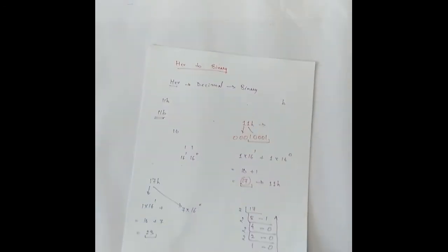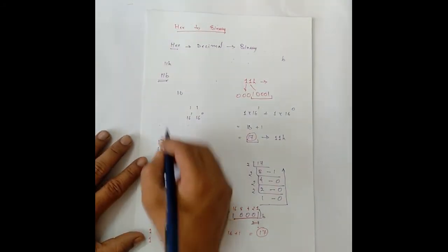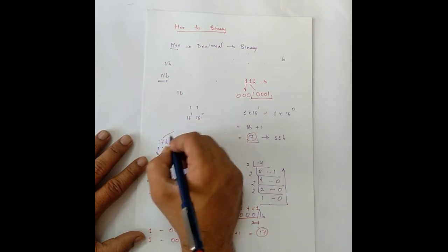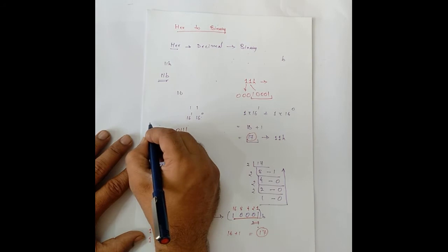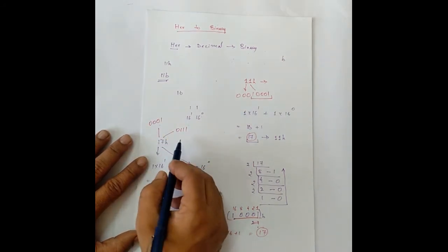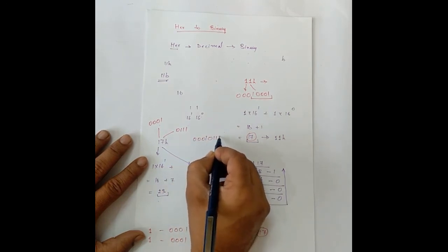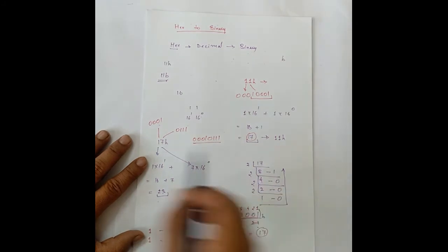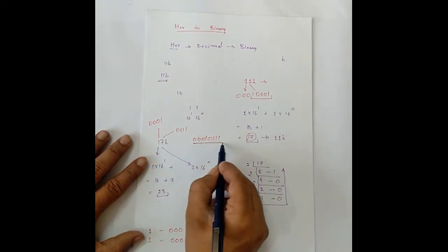Similarly, we can do for another number, let's say 17. So, for 17, the binary of 7 is 0 1 1 1. The binary of 1 is 0 0 0 1. So, we write it in the same sequence together, we get 0 0 0 1 0 1 1 1. The hexadecimal, 23 is the decimal and this is the binary.